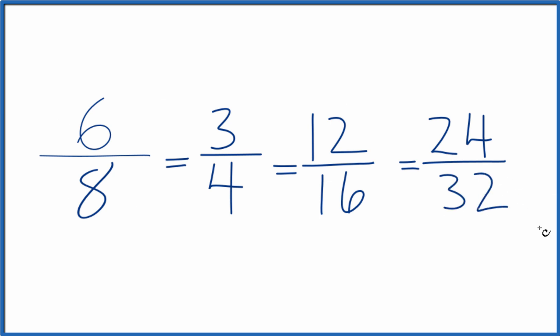And all of these are equivalent ratios, equivalent fractions. 6 divided by 8, 3 divided by 4, 12 divided by 16, or 24 divided by 32. They all have the same decimal value.